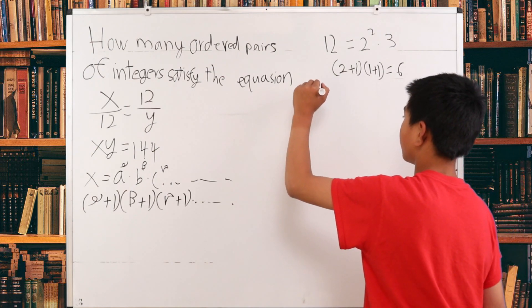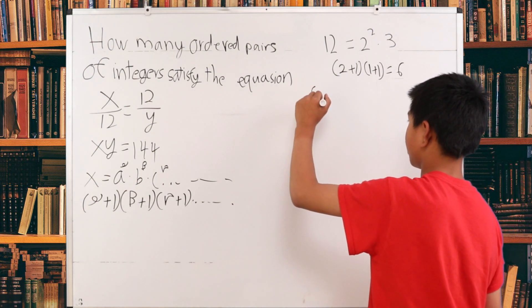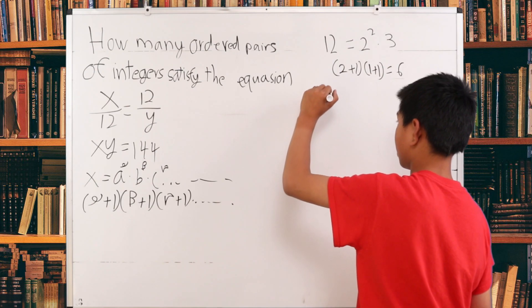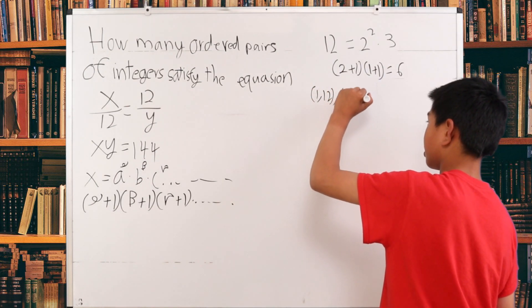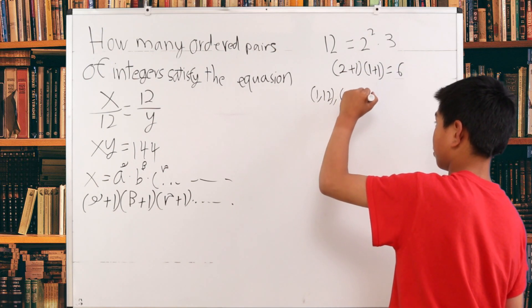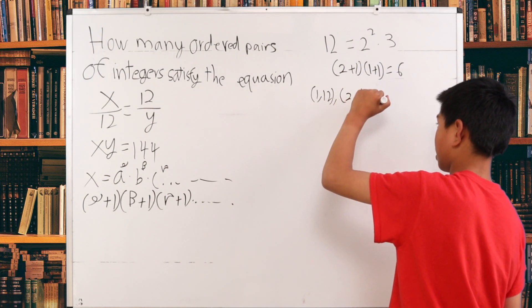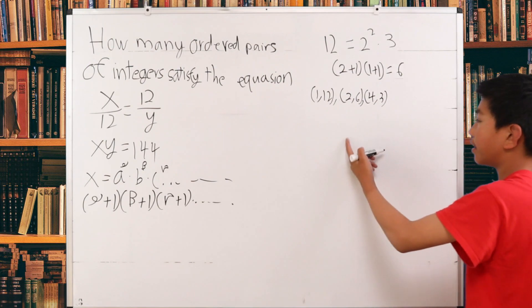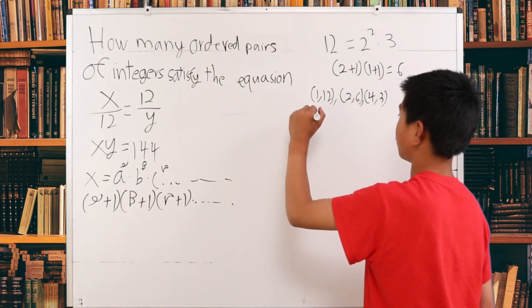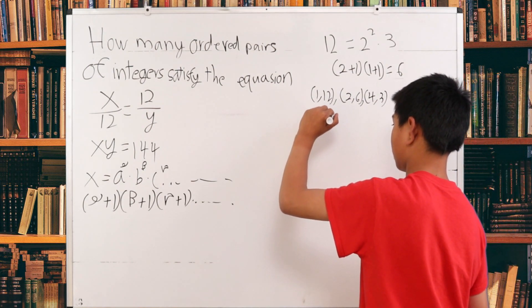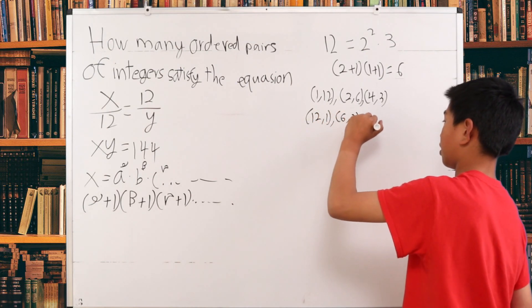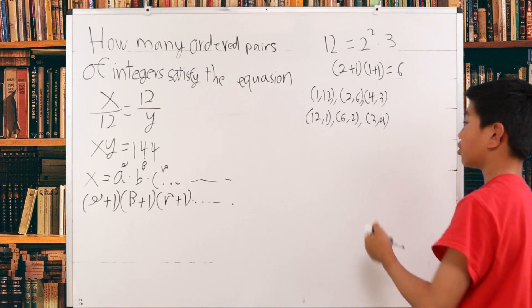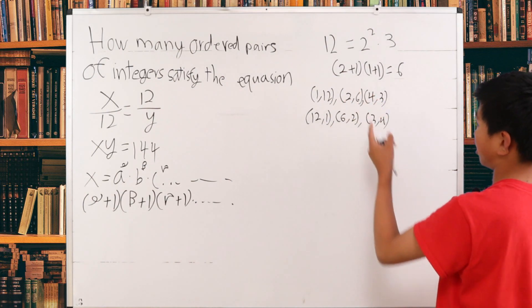So 12, let's see, are there 12 combinations? There's 1, 12, there's also 2 and 6, and there's also 4 and 3. And we can verify. All these can be flipped over. So this is 12 and 1, 6 and 2, and 3 and 4. So there are 6 combinations here.